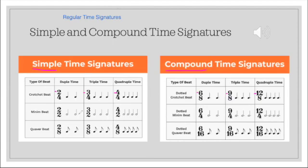And the simple time signatures, their main beats are very basic note values like crotchets, minims, and quavers. For the compound time signatures they are dotted beats, so dotted crotchets, dotted minims, and dotted quavers.